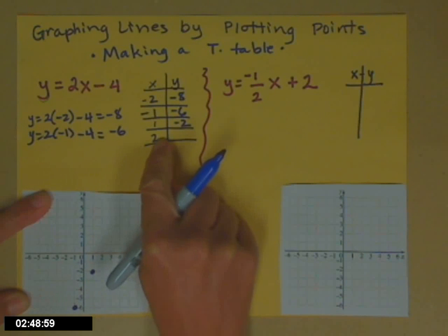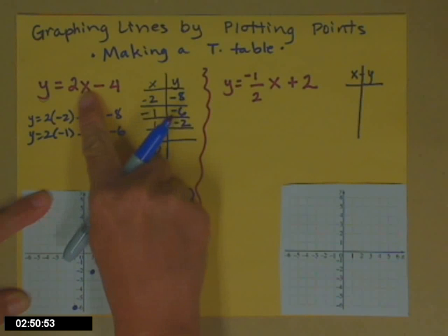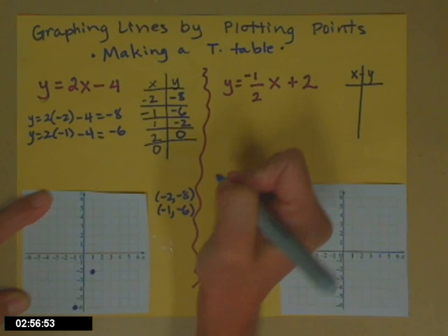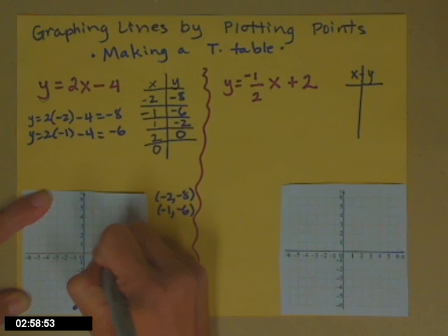If x is 2, the 2 goes in where the x is. 2 times 2 is 4, minus 4, there's a 0. Oops, you just found your x-intercept. 2, 0, there's that point.